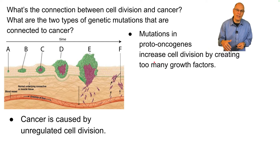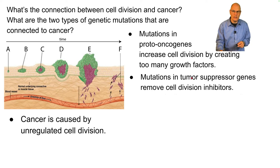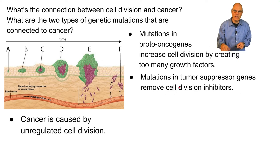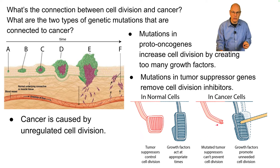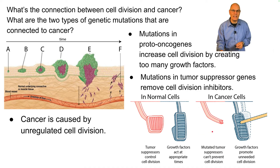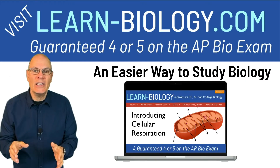Growth factors stimulate cell division within a cell itself or within other cells. There are also genes called tumor suppressor genes, which remove cell division inhibitors — the kind of checkpoints we've seen previously. In normal cells, you have the brakes (tumor suppressors) and the accelerator (growth factors), acting at appropriate times. When cells become cancerous, you can have mutated tumor suppressors that can't prevent cell division even when it shouldn't be happening, and growth factors that promote cell division at unneeded moments.